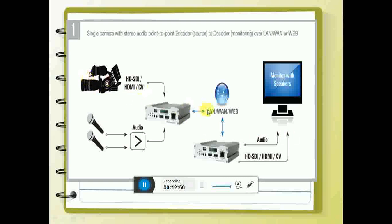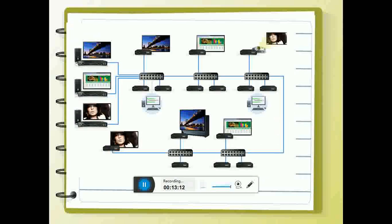Examples include a single camera with stereo audio using a point-to-point encoder to decoder over LAN, web, or WAN, with an audio signal and HDMI signal connected to a monitor — any one of these is active at a time and then given to the monitor. Another example involves different systems through cable services: all these are monitored, multiplexed, encoded, and decoded, and depending on which device the transmission is given, it is chosen accordingly. Thank you.